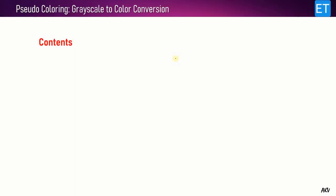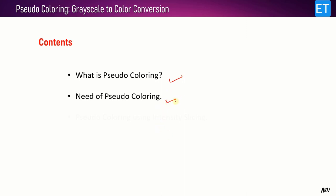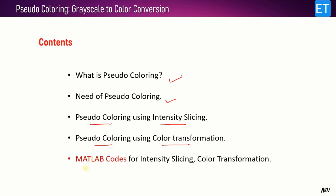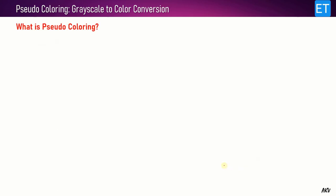Let me show you the contents of this video. First, I will start with what is pseudo coloring, then explain the need for it. Then we'll talk about the first method to achieve pseudo coloring, known as intensity slicing, followed by the second method, color transformation. Finally, I will explain the MATLAB code implementing both methods.